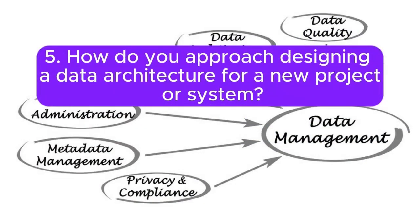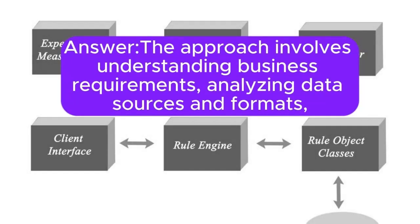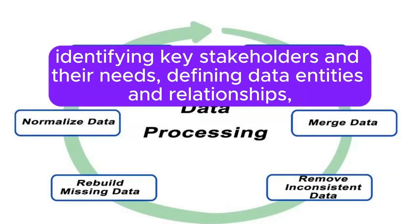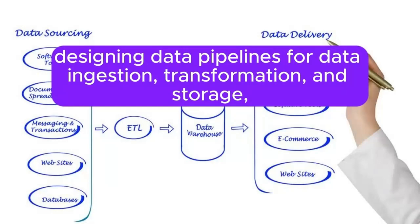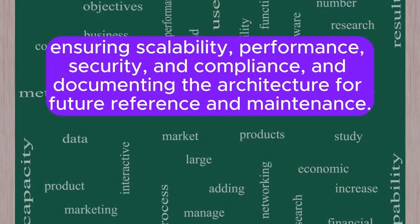Question 5: How do you approach designing a data architecture for a new project or system? The approach involves understanding business requirements, analyzing data sources and formats, identifying key stakeholders and their needs, defining data entities and relationships, choosing appropriate data storage technologies such as relational databases, NoSQL databases, or data lakes, designing data pipelines for data ingestion, transformation, and storage, ensuring scalability, performance, security, and compliance, and documenting the architecture for future reference and maintenance.